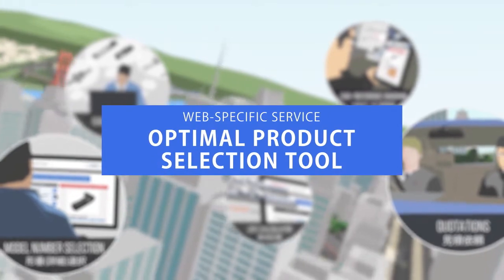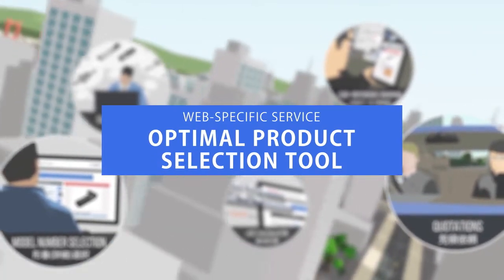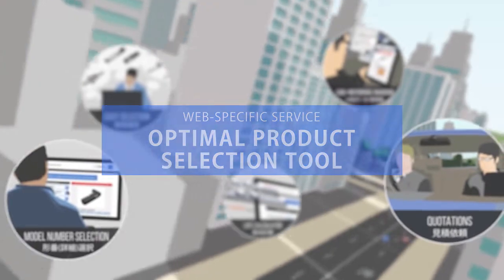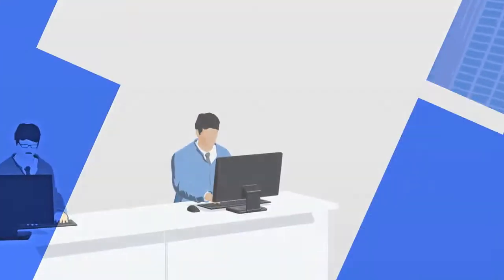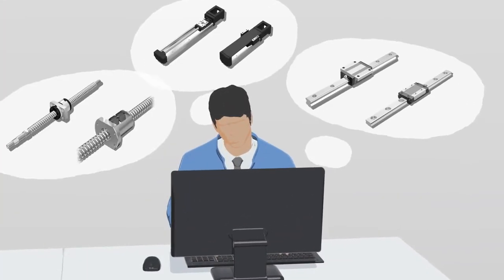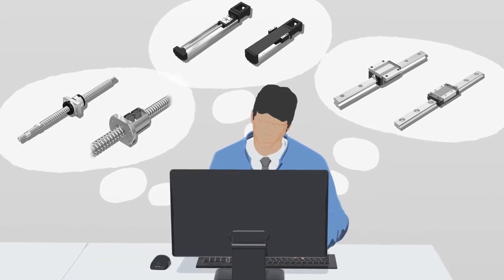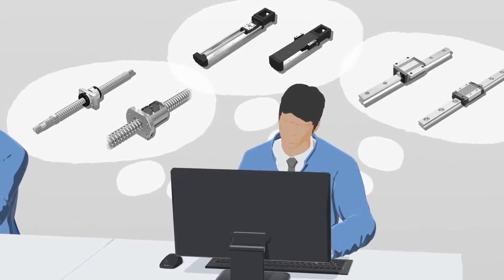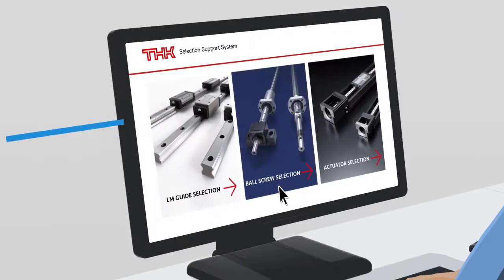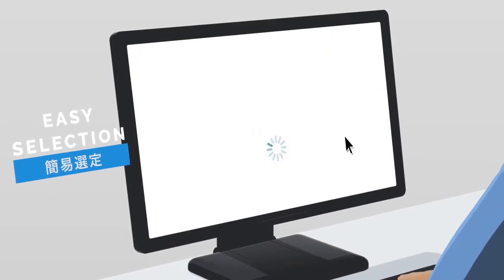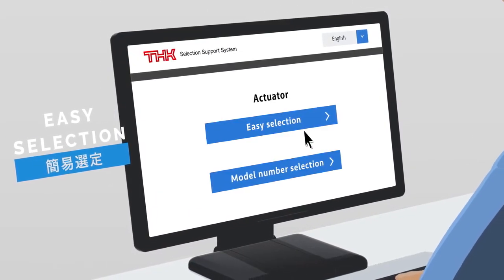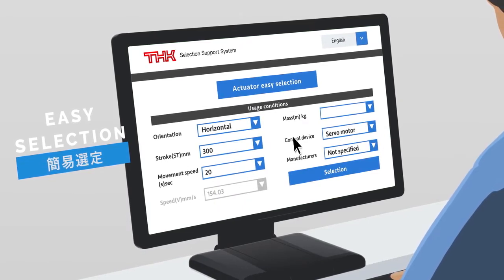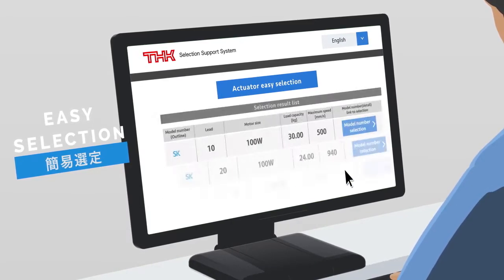Optimal product selection tool. You know the kind of product you need, but there are so many model numbers, you don't know which one to choose. If that describes you, why not try our easy selection tool? Enter your usage conditions to receive a list of recommended model numbers.